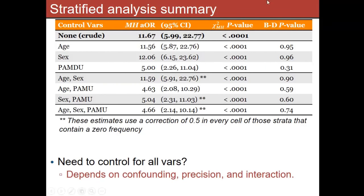Here are some stratified analyses using the MH — Mantel-Haenszel — adjusted odds ratio. This table summarizes a lot of analyses in one place. Every row is the outcome of a different stratified analysis. The original two-by-two table gives 11.7. When we stratify on age (dichotomized), we get a summary odds ratio across strata of age. Across sex, and so forth. When we stratify simultaneously on age and sex, we summarize an odds ratio and get 11.59.